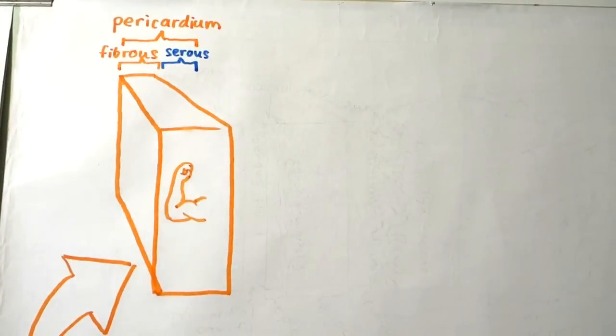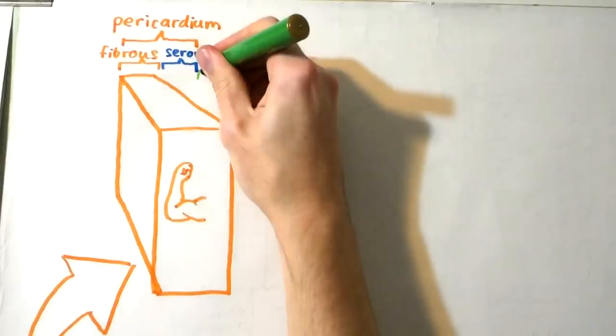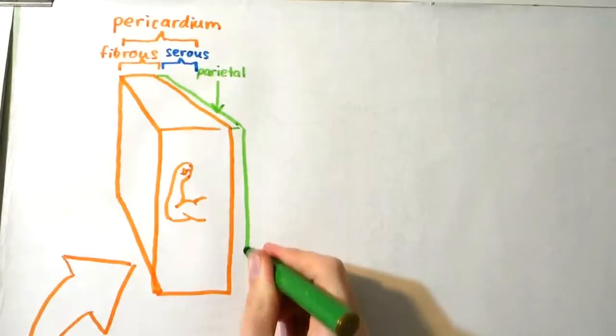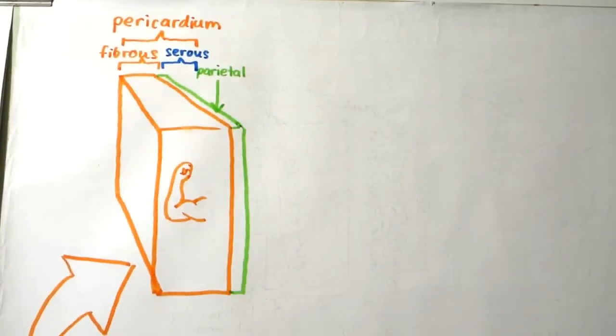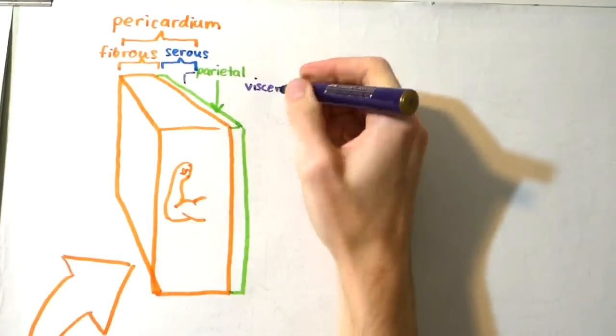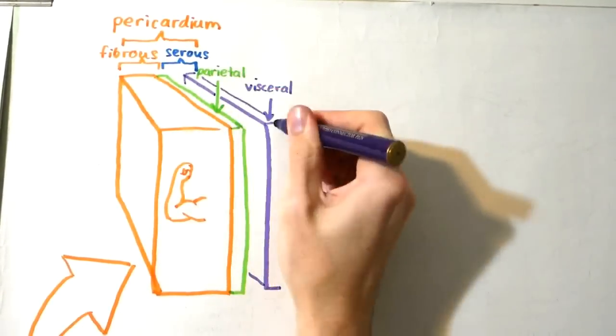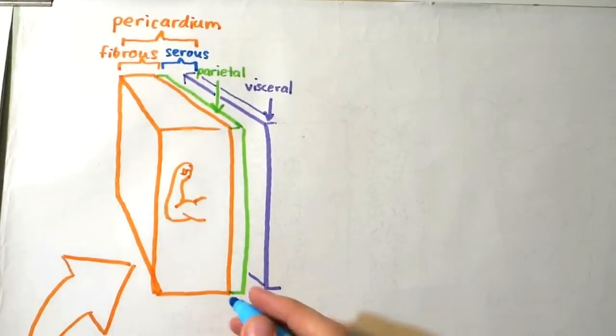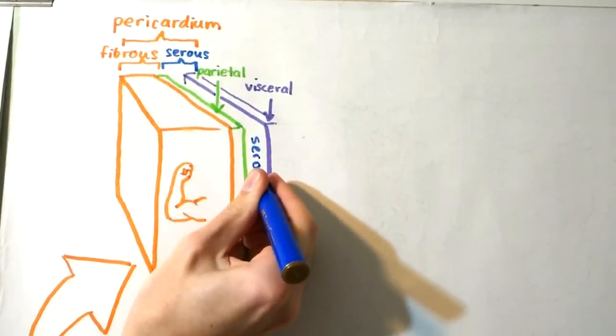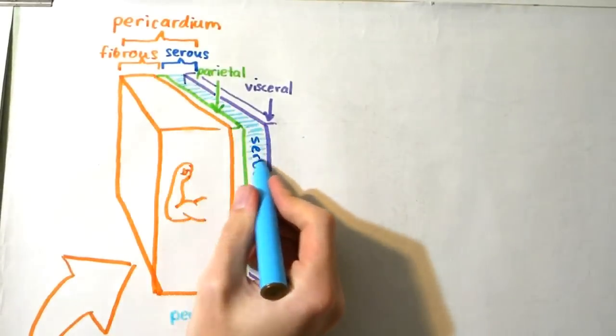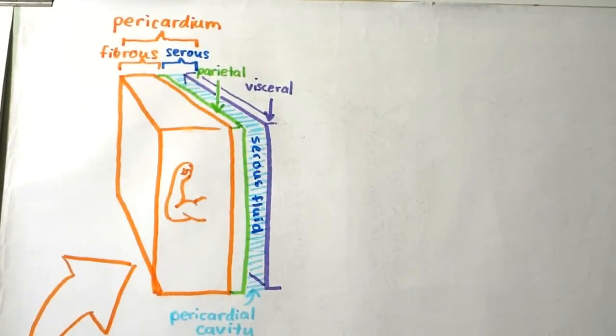The serous pericardium is the inner thin layer. It is also divided into two layers: the parietal serous, which lines the internal surface of the fibrous pericardium, and the visceral serous, which is adherent to and forms the outer layer of the heart, also called the epicardium. Between the fibrous and serous pericardium is a space called the pericardial cavity. The pericardial cavity contains serous fluid, which is responsible for lubrication and reducing friction between the heart and surrounding organs when it contracts.